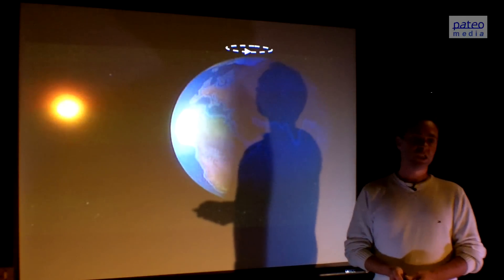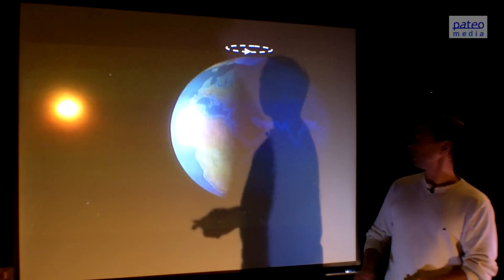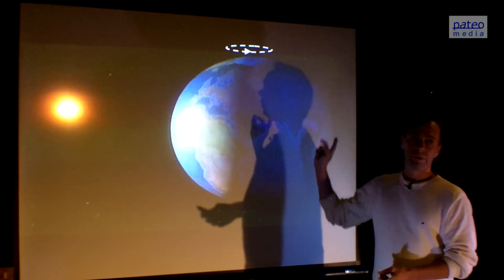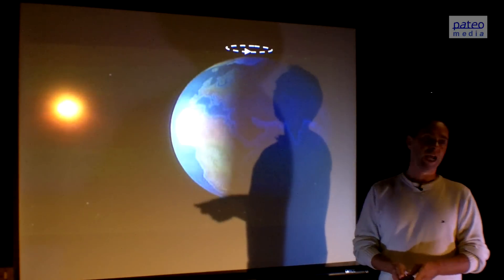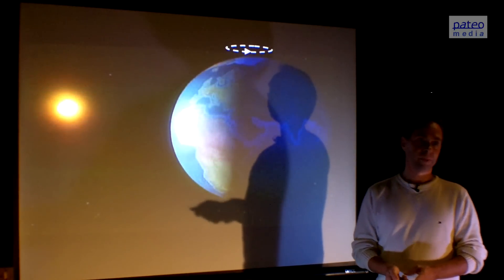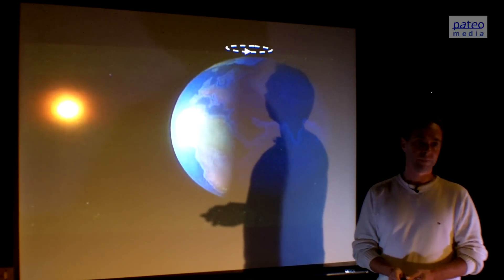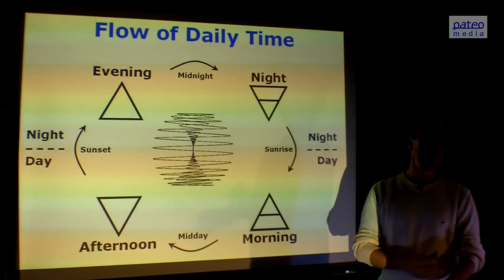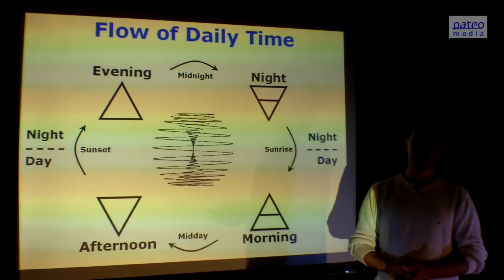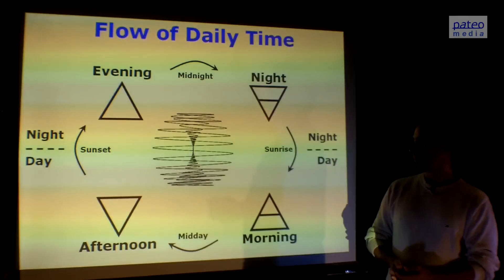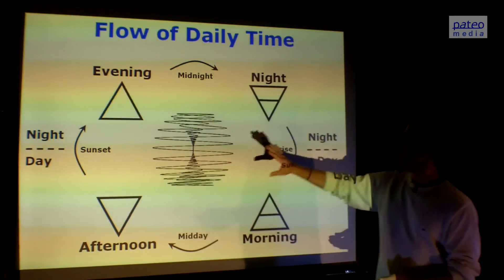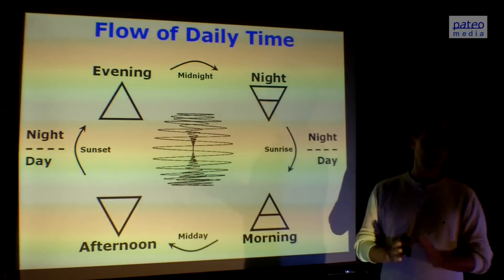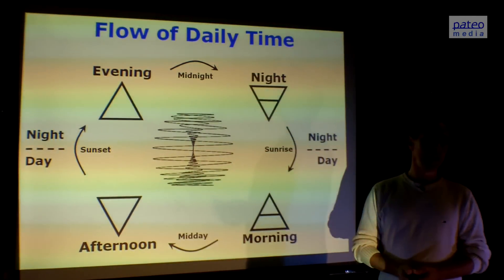This is perhaps one of the most important movements. Our mother planet is rotating around our own axis in a period we call 24 hours. And in that daily time we find four phases: afternoon, evening, night, and morning. And they correspond to the four energies.